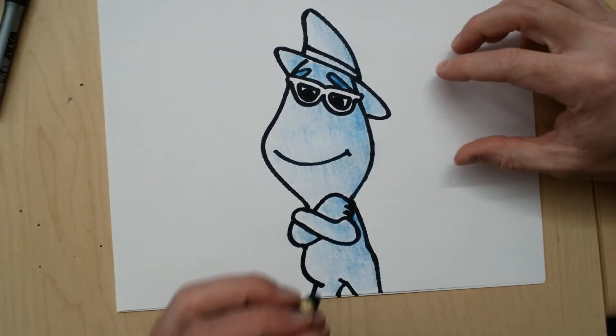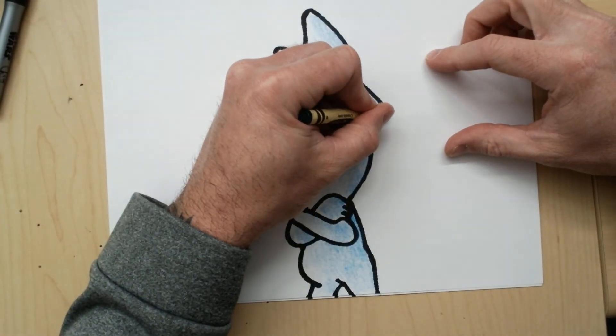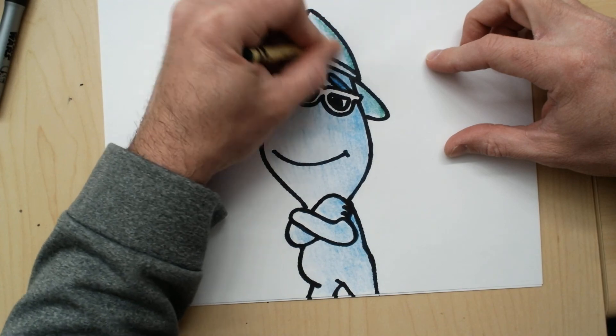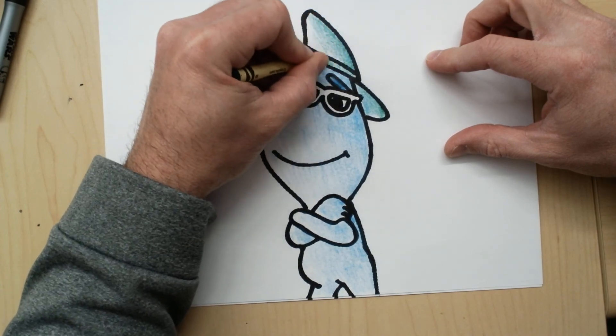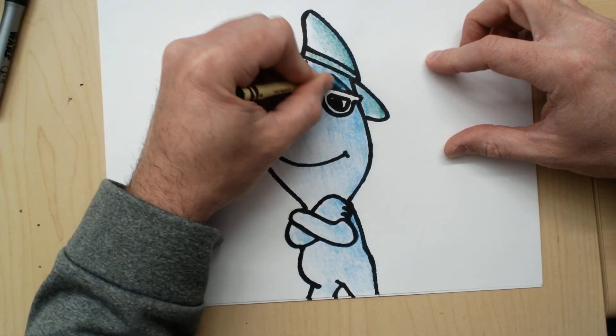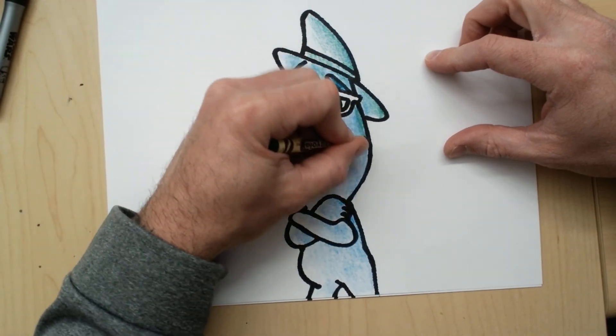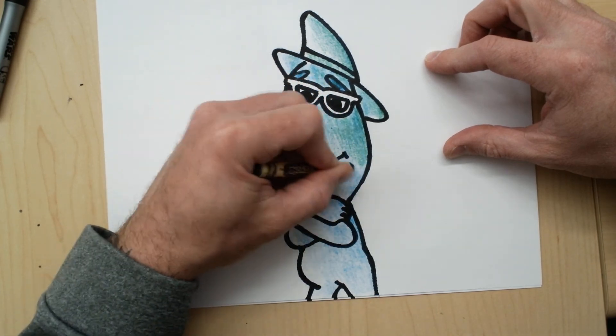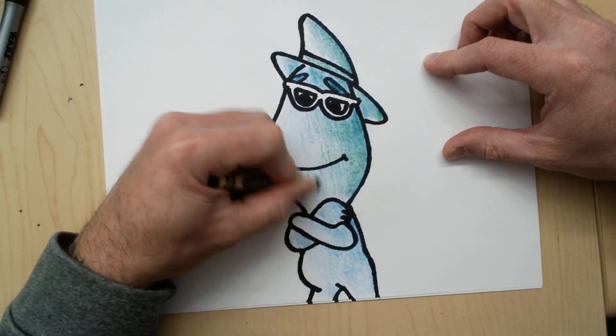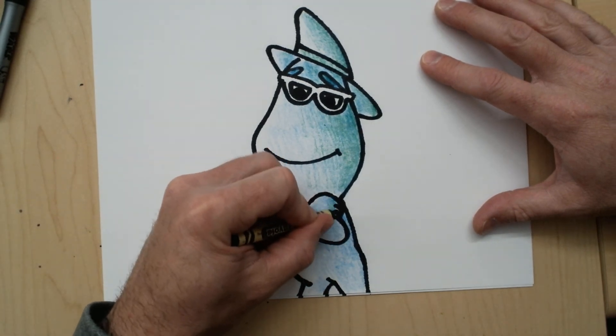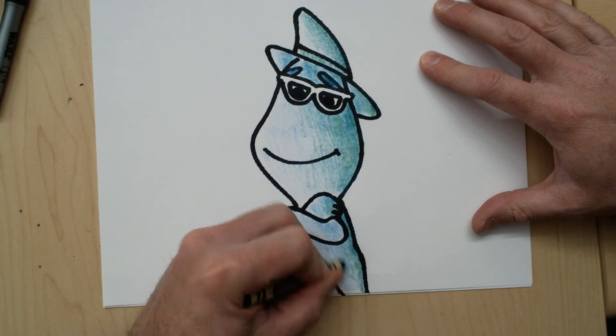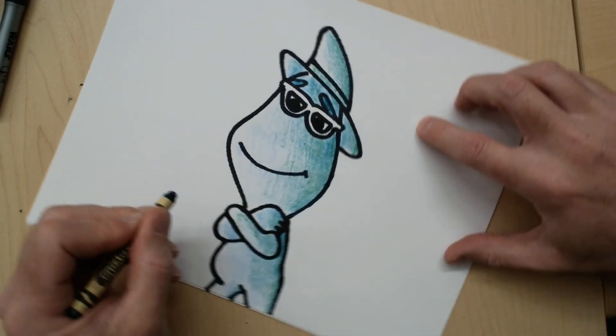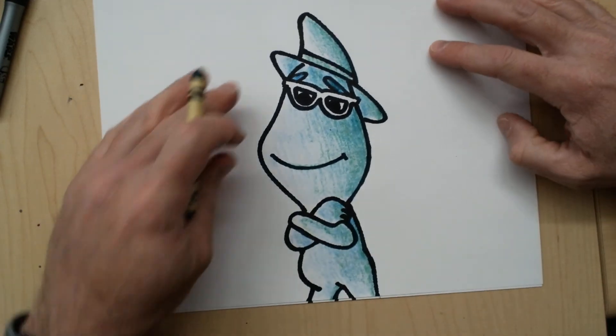Okay now I'm going to take my green and what I'm going to do is on that darkest edge I'm going to add a little bit of green and it's going to give us that turquoise color that we want. And I'm not going to do the whole thing, I'm kind of just pushing lightly on the places where I push the hardest with the blue to kind of get that effect that he kind of glows a bit. Like that, like that.